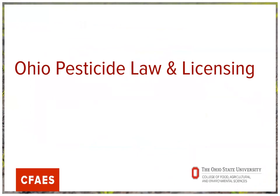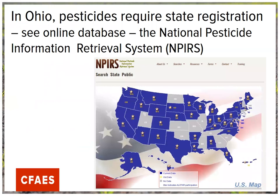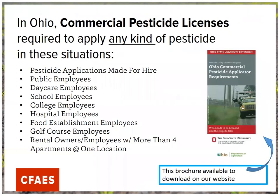In addition to federal registration, all pesticides have to have a state registration. There's an online database called NPERS — anybody can use this system, click on your state, and search by product name, active ingredient, or manufacturer to find out if the product is registered. It is not legal to use a product in Ohio that doesn't have both the federal and the state registration.